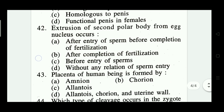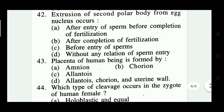Question number forty-two: extrusion of second polar body from egg nucleus occurs — after entry of sperm before completion of fertilization, after completion of fertilization, before entry of sperm, without any relation of sperm entry. The right answer is option A — after entry of sperm before completion of fertilization.